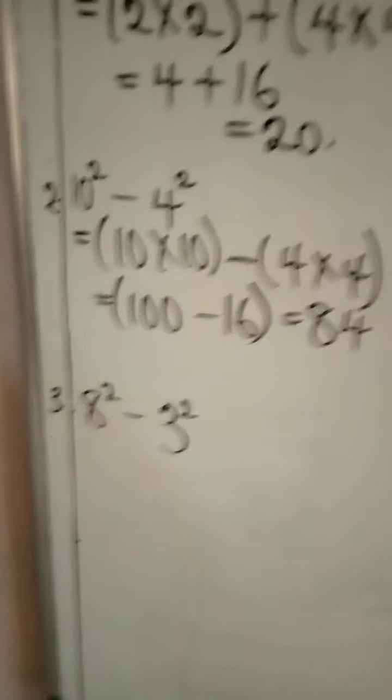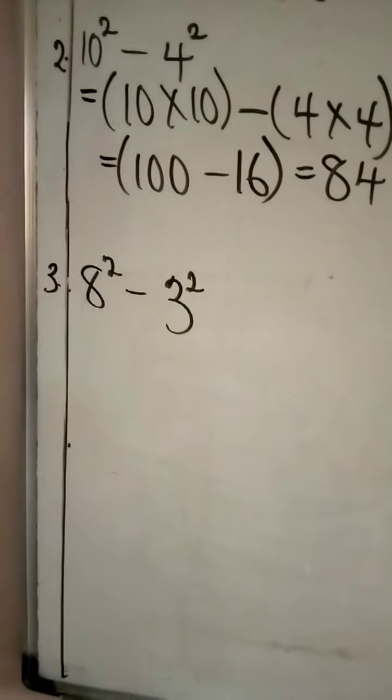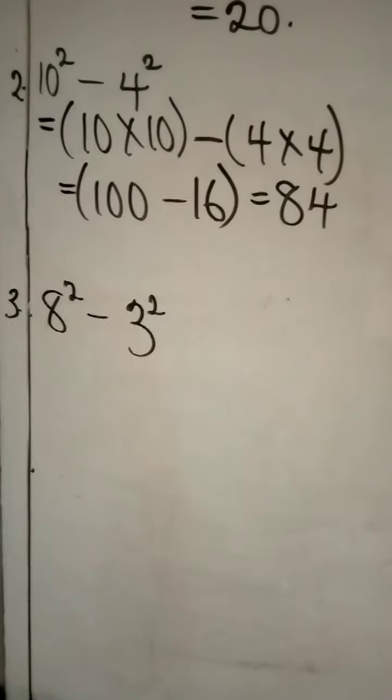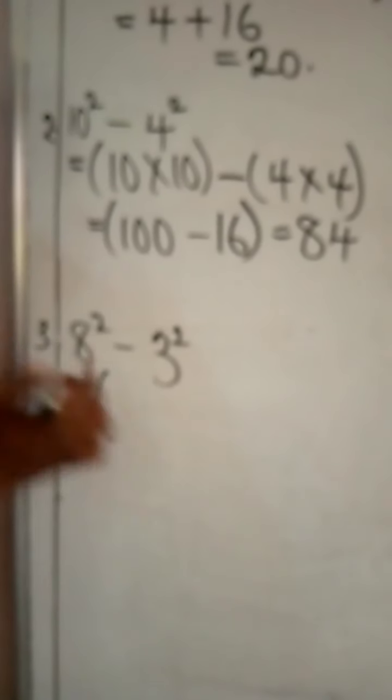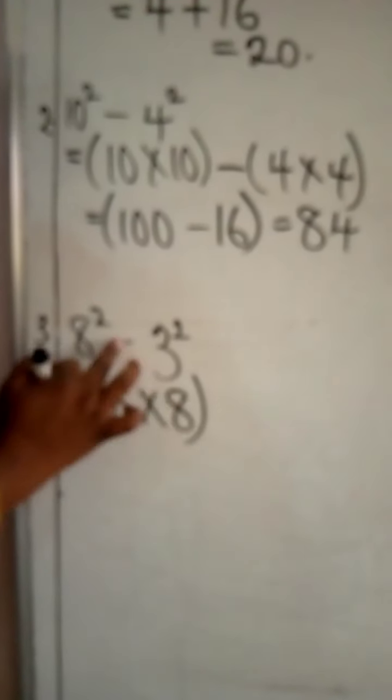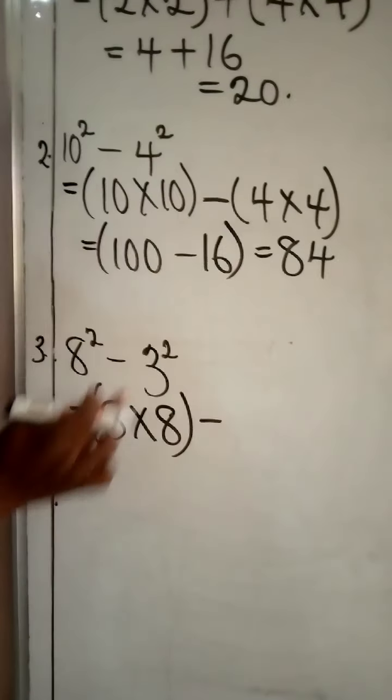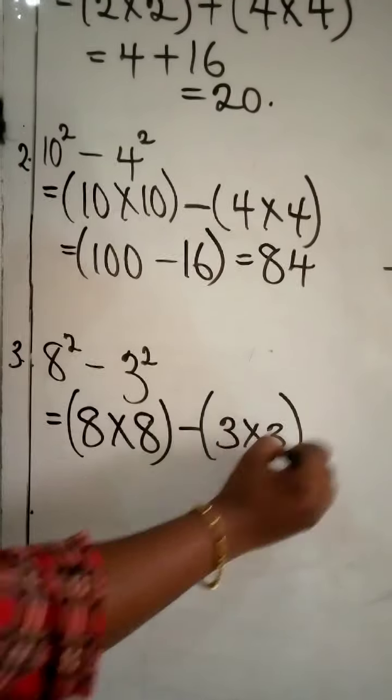Okay. Now, let's do example 3 together. What do you have to do? All you have to do is what? Expand each square. Which is this. 8 times 8. Minus sign. And then 3 times 3.